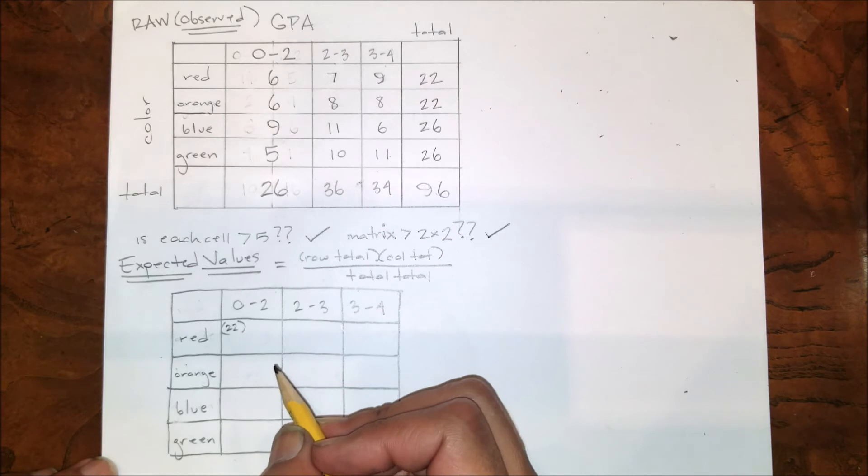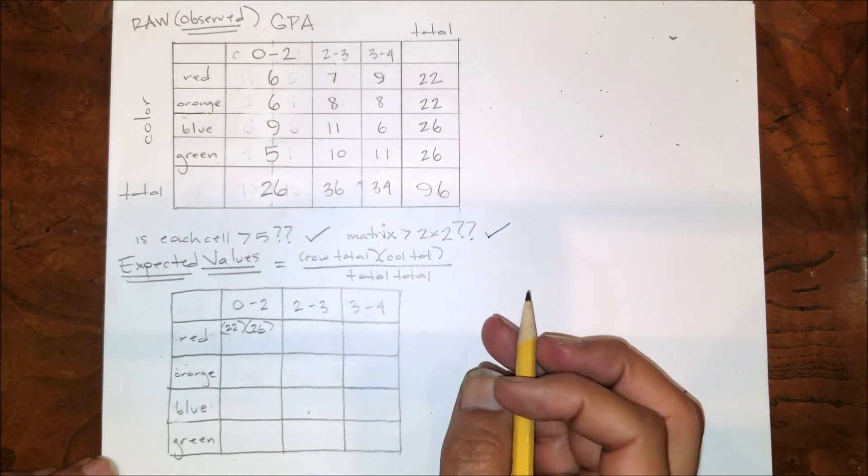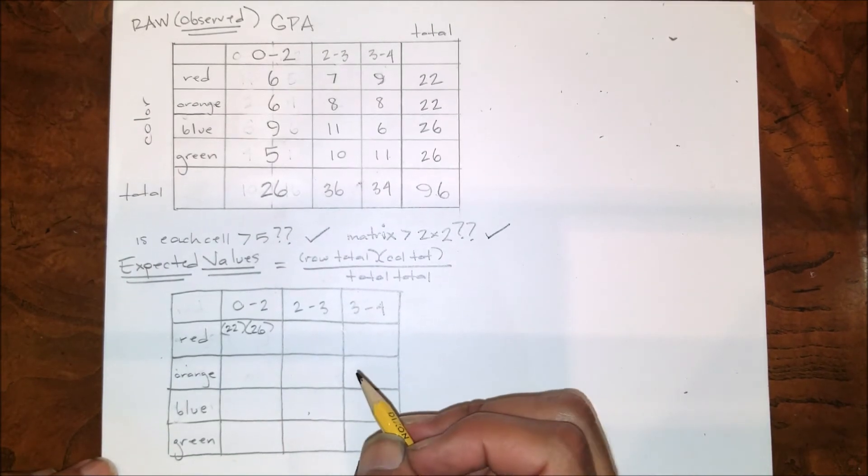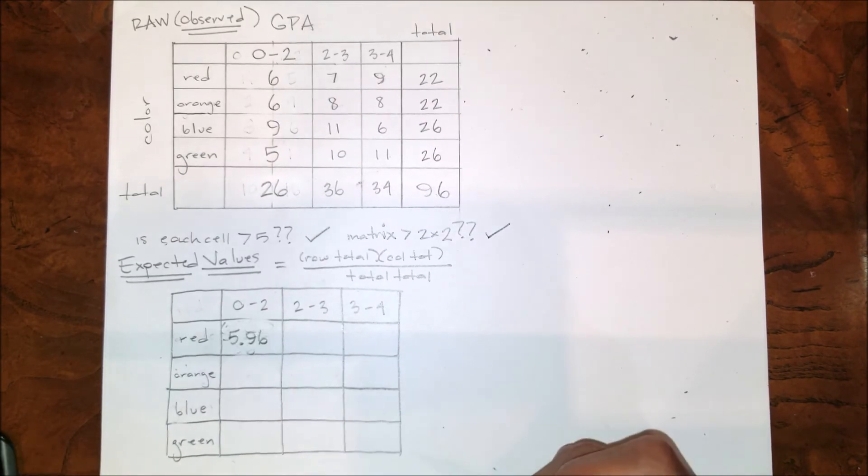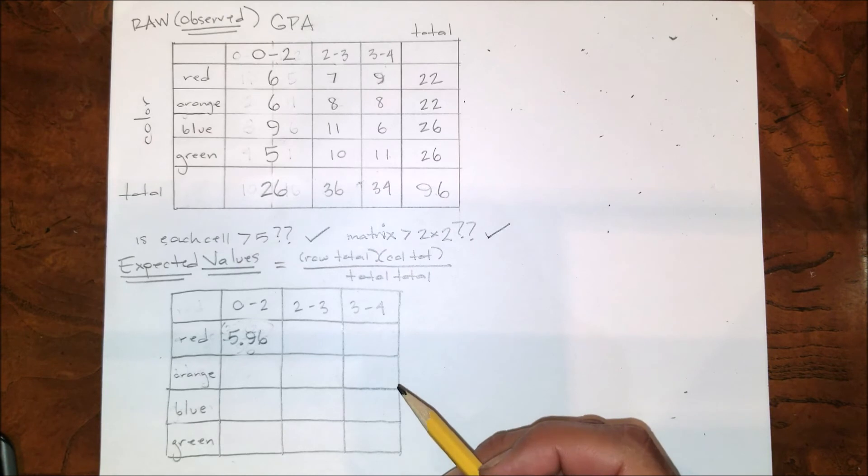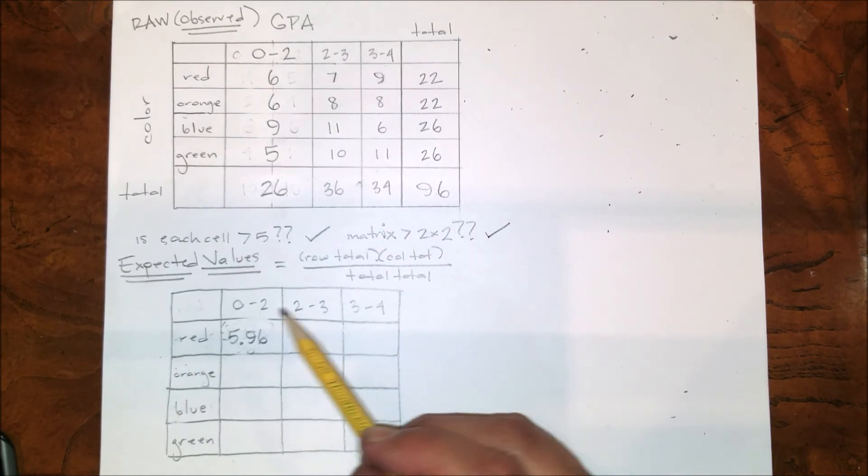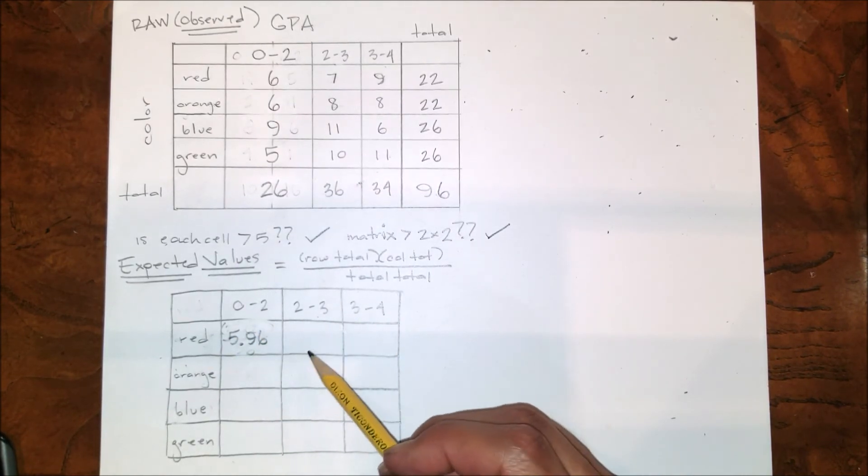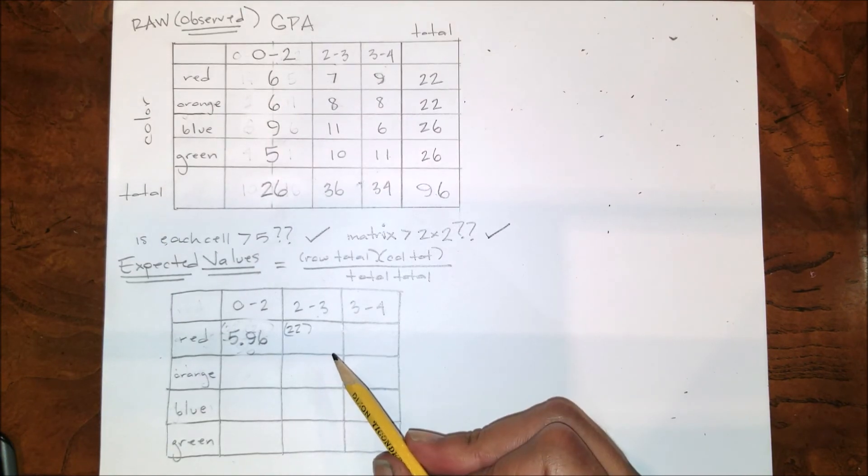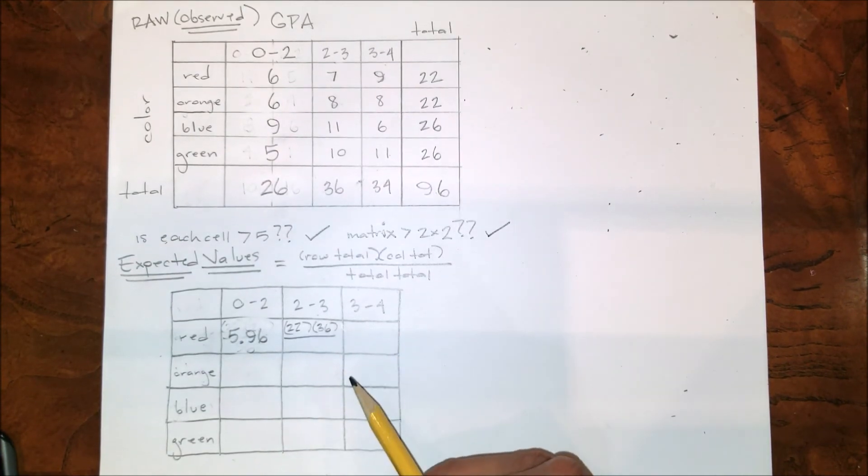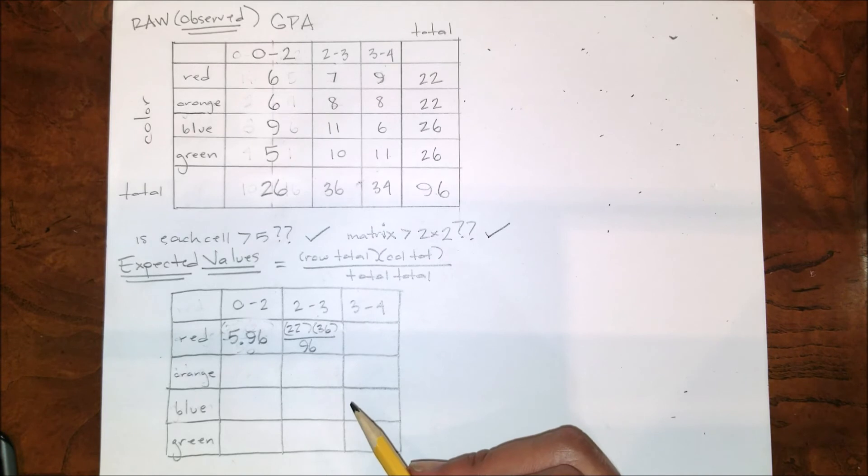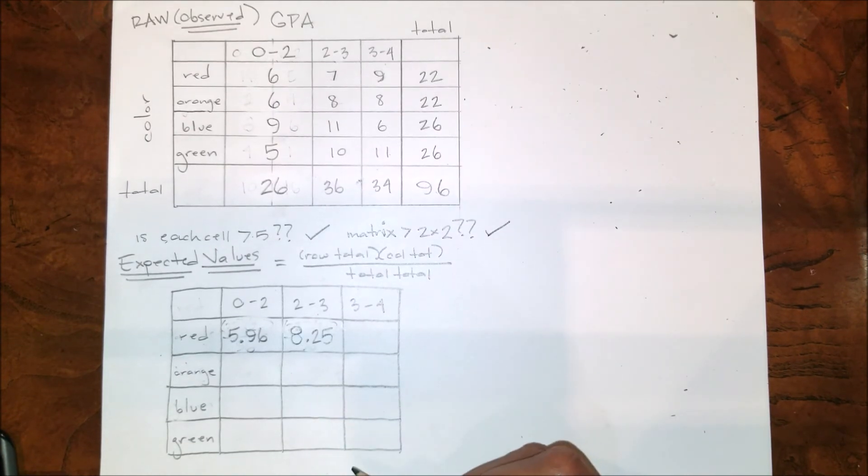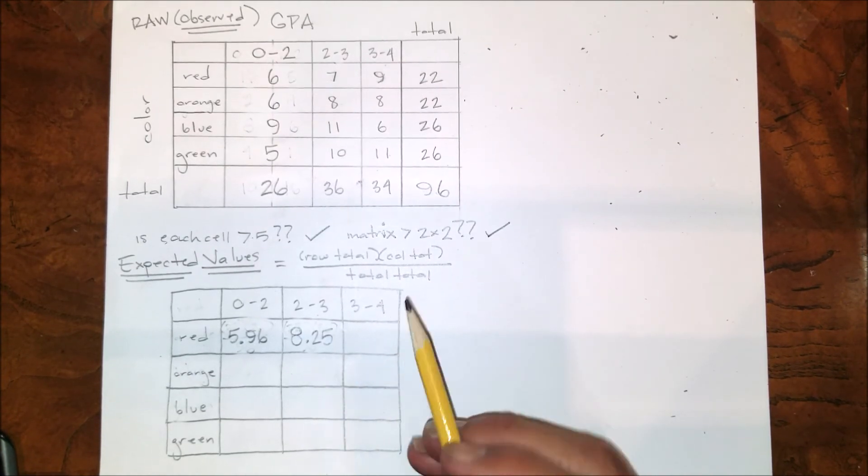And that's all divided by the total total of 96. So 22 times 26 divided by 96 equals 5.96. And I'm going to repeat that process. Now I need the expected value for red between two and three - row total for red, column total for two to three, and the total total for this entire matrix. Right now, 22 times 36 divided by 96 is 8.25. And one more time, now I need the expected value for red between three and four - row total for red, column total for between three and four, and then the total total for this matrix. And 22 times 34 divided by 96 is 7.79.